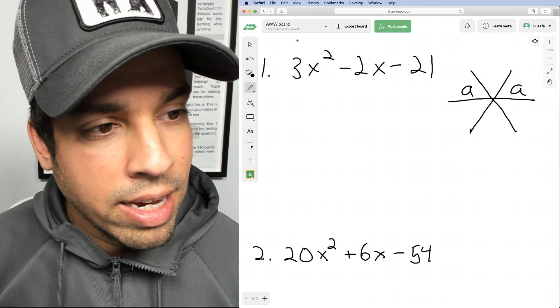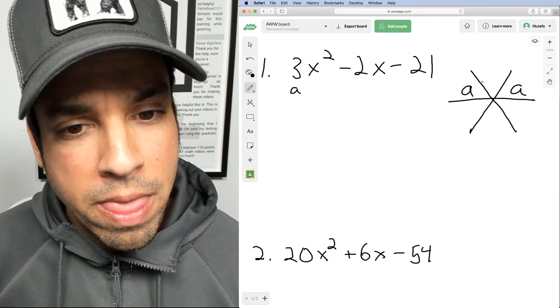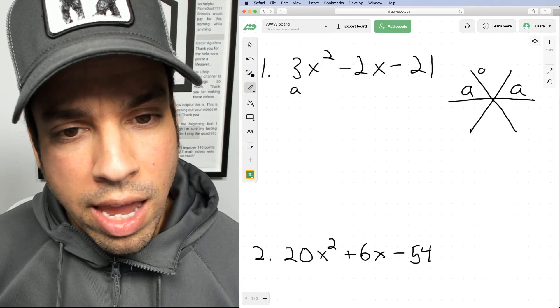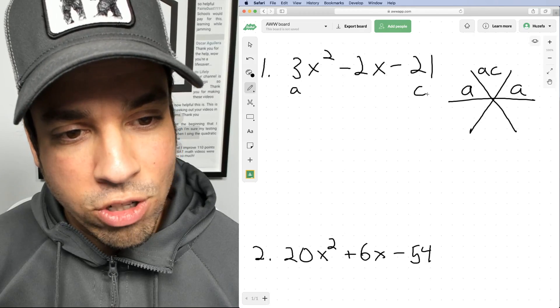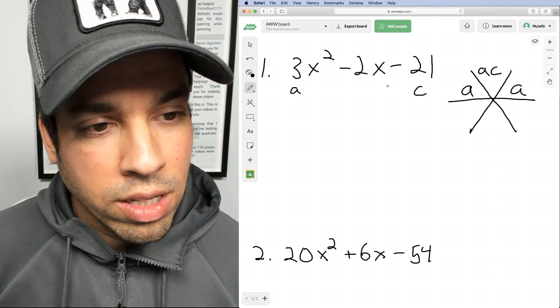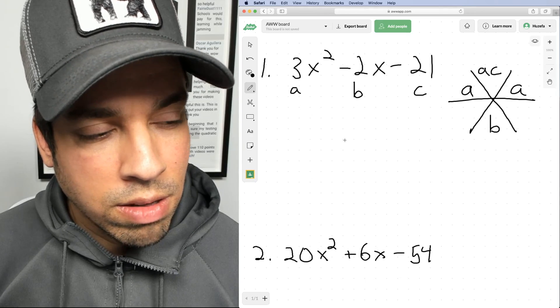What goes in this little grid, here and here we have the A terms. The A term is whatever is in front of the X squared. Then on top we have A times C. Since this is the A term, this is the C term, that little constant out here. And then what goes on the bottom is the B term, and of course the B is the middle term.